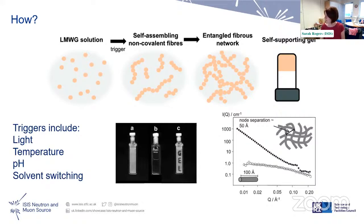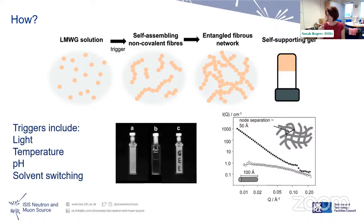The scattering profile before and after gelling shows a clear difference. The molecules on their own give a flat profile, and when they gel they form a network — you can even see the node separation as a small bump in the data, giving quite a lot of structural information on the before and afters.